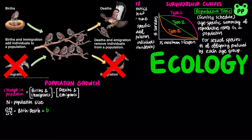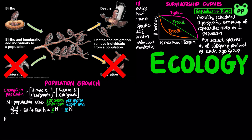This equation can be further rewritten in terms of per capita birth rate b and per capita death rate or mortality m. Per capita means per individual, and the per capita birth rate is the number of offspring produced per unit time by an average member of the population. The difference between per capita birth rate and the per capita death rate can be defined as the per capita rate of increase, or r. When the birth rate equals the death rate, r equals zero and there is zero population growth.